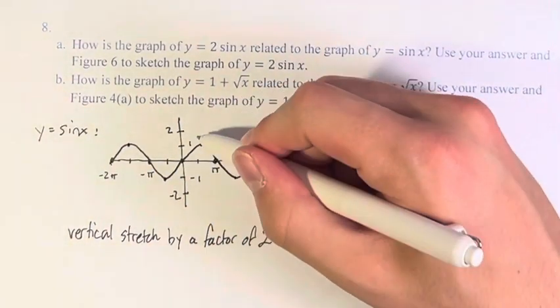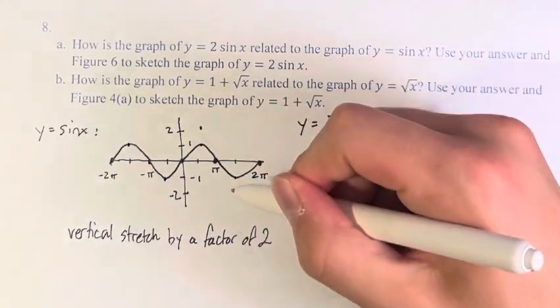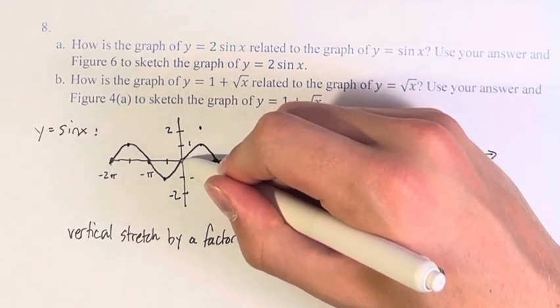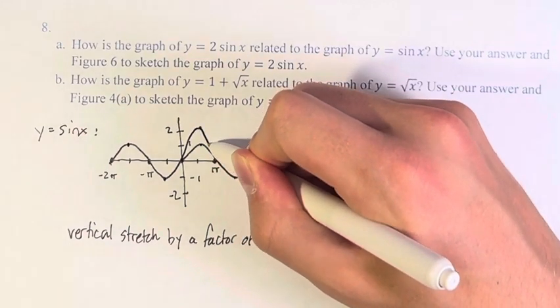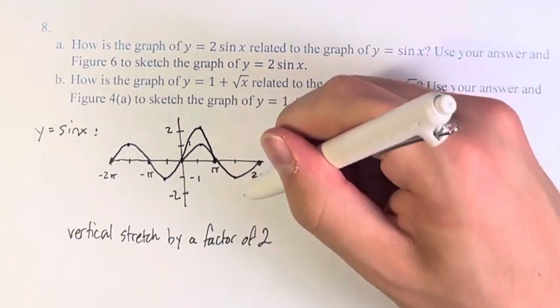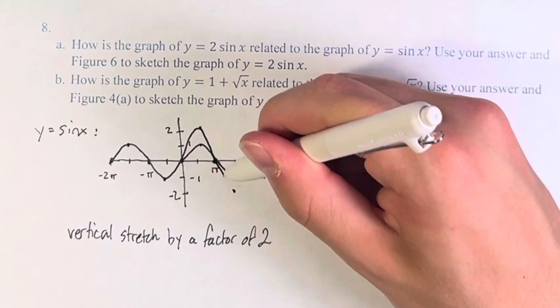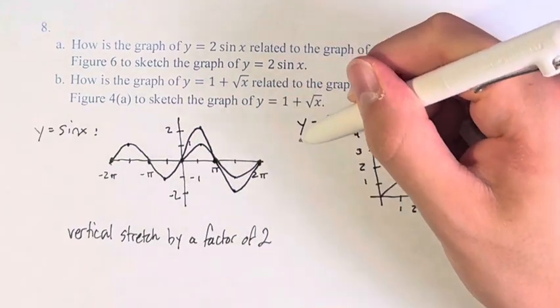So here, instead of 1, we have to go up to here, to 2. Then we go back down to 0, so it looks something like this. It's not exactly perfect, but then we go down to negative 2, and it looks like that.